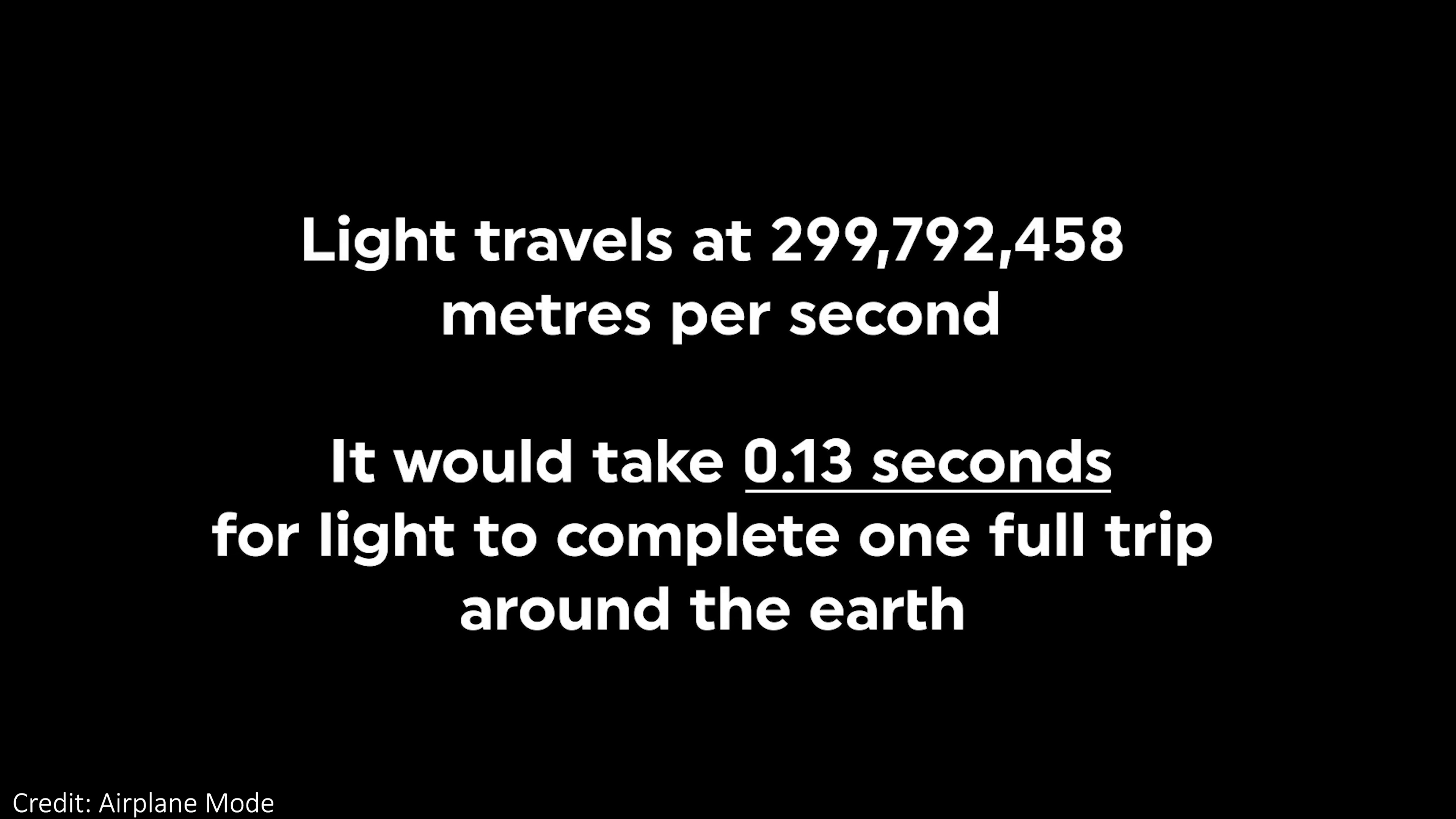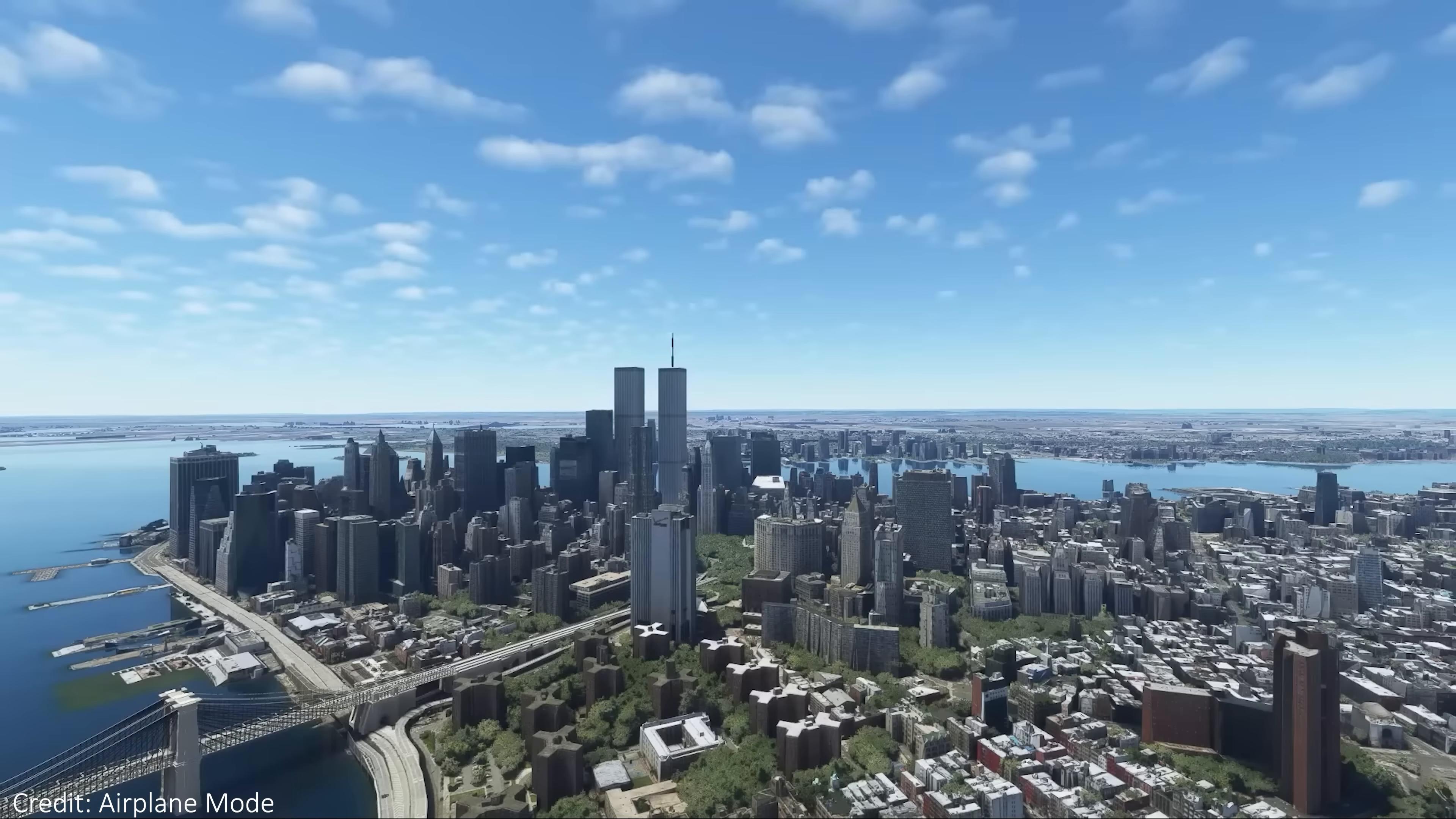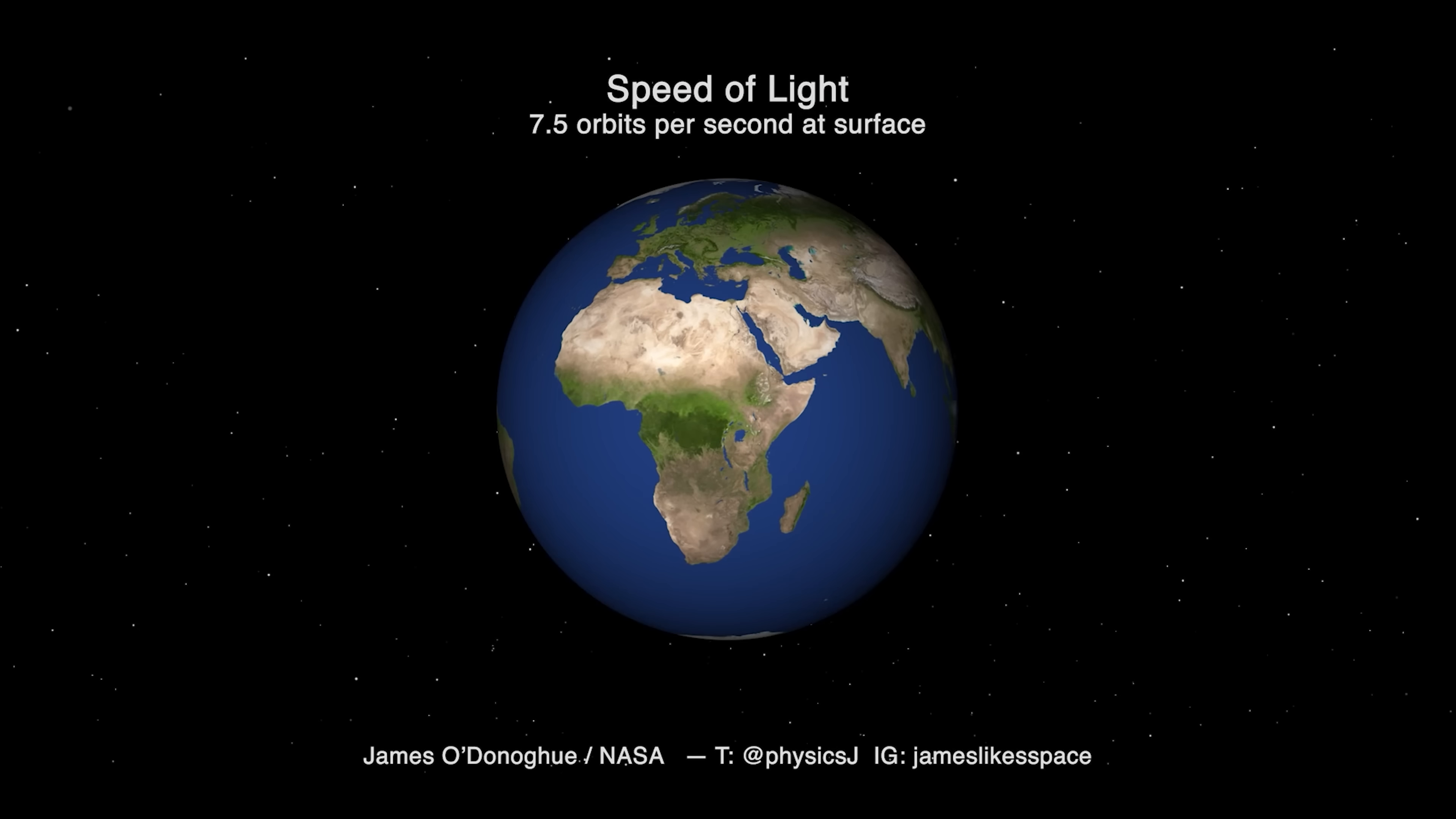The thing is, light travels really, really fast. About 300,000 meters per second. This is incredibly quick, and means that light could travel all the way around the equator of the Earth in 0.13 seconds.